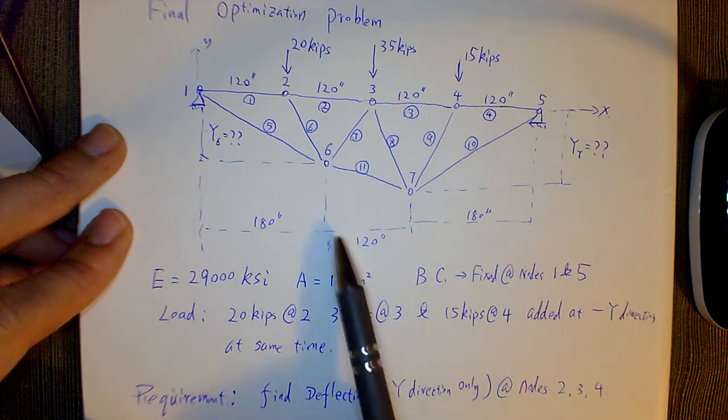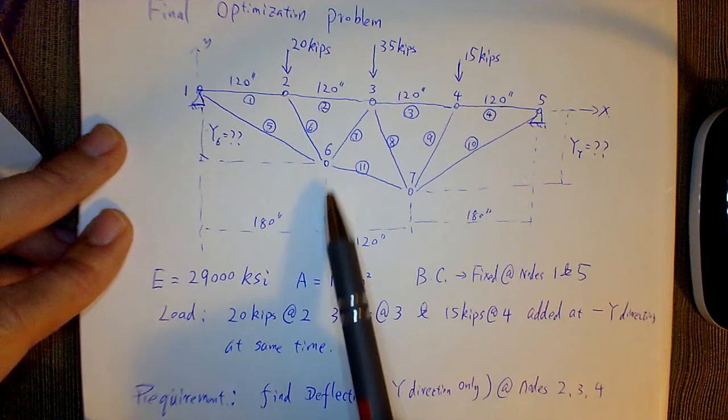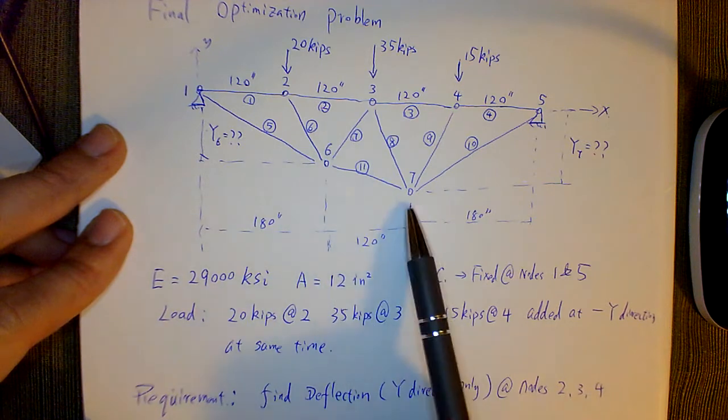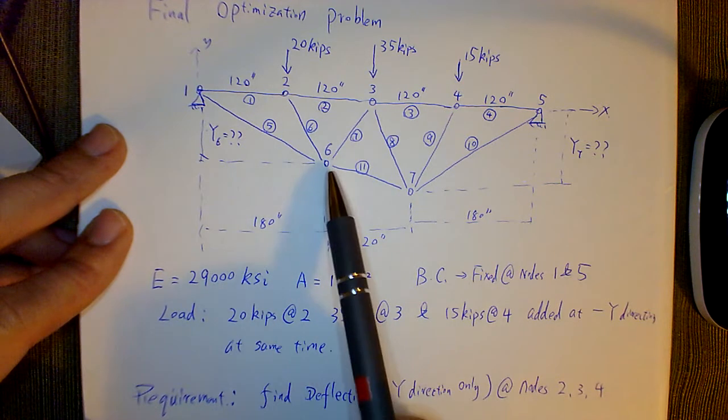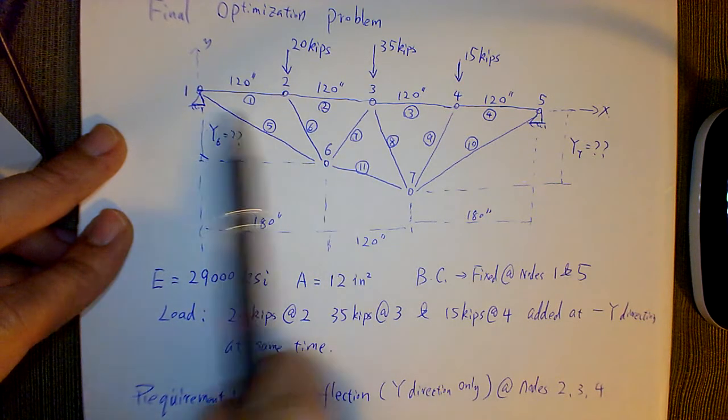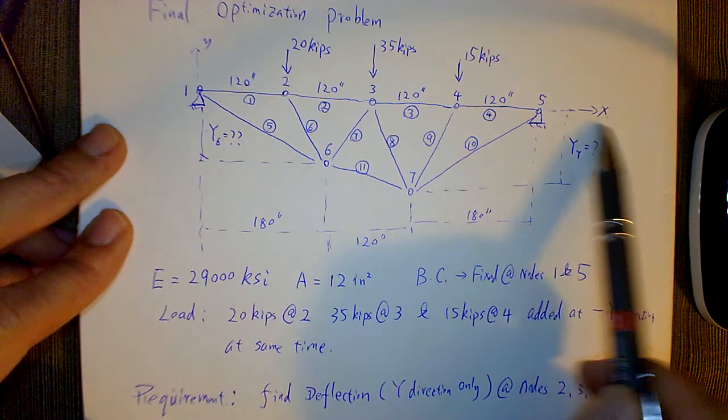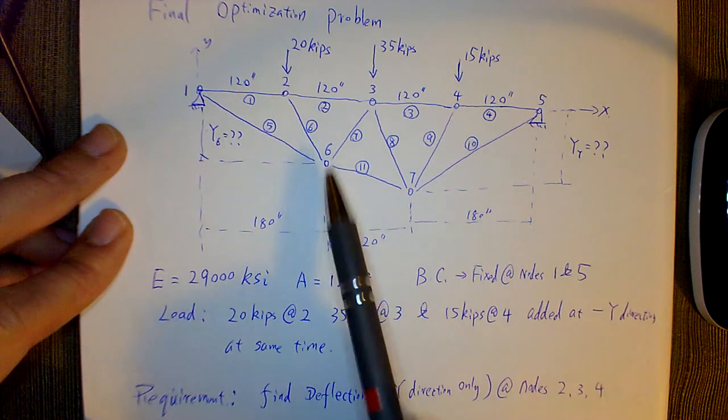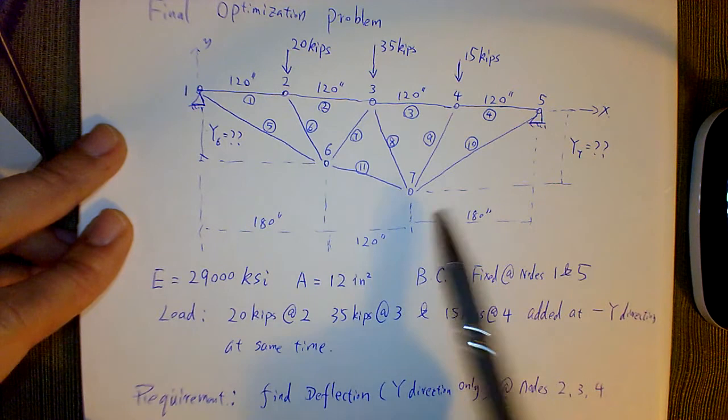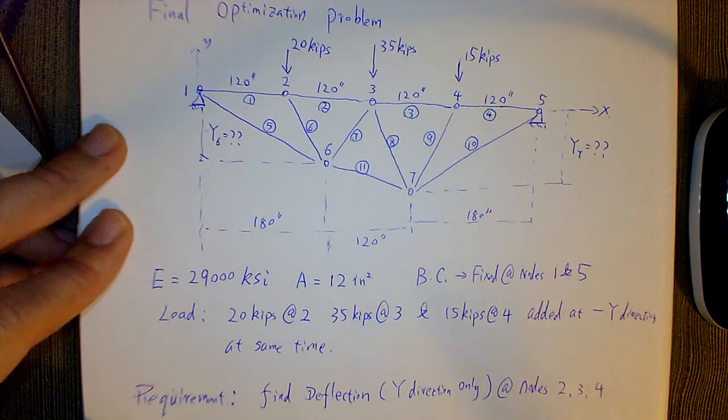So they have to stay in those vertical lines, but where they are—like the y6 and y7—they're able to move up and down. That's where you want to optimize.